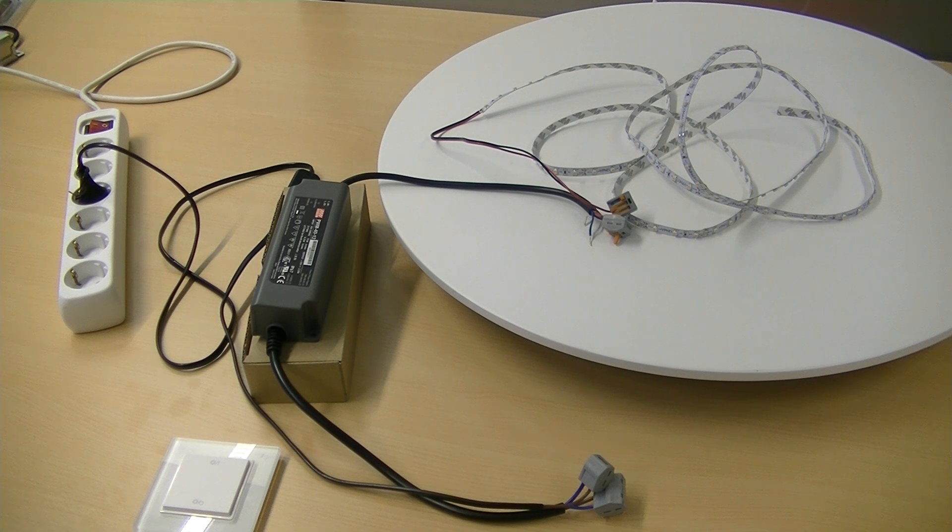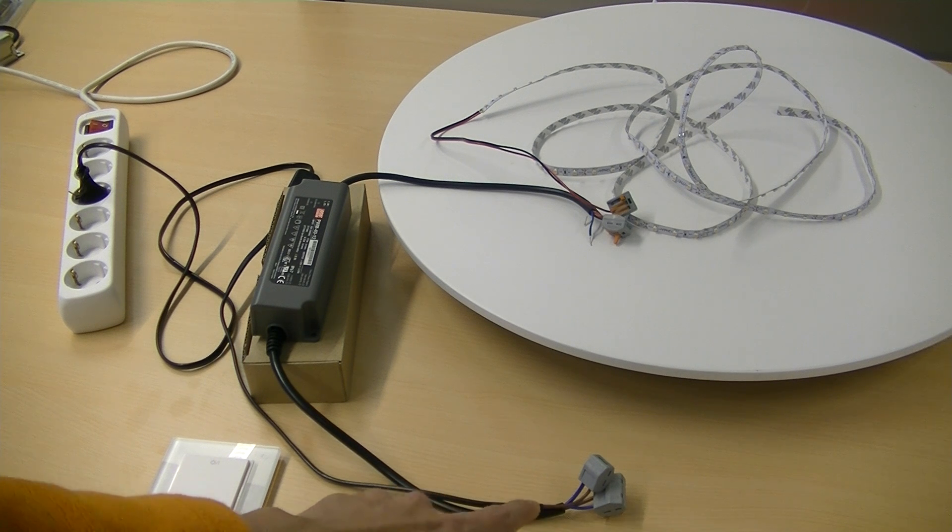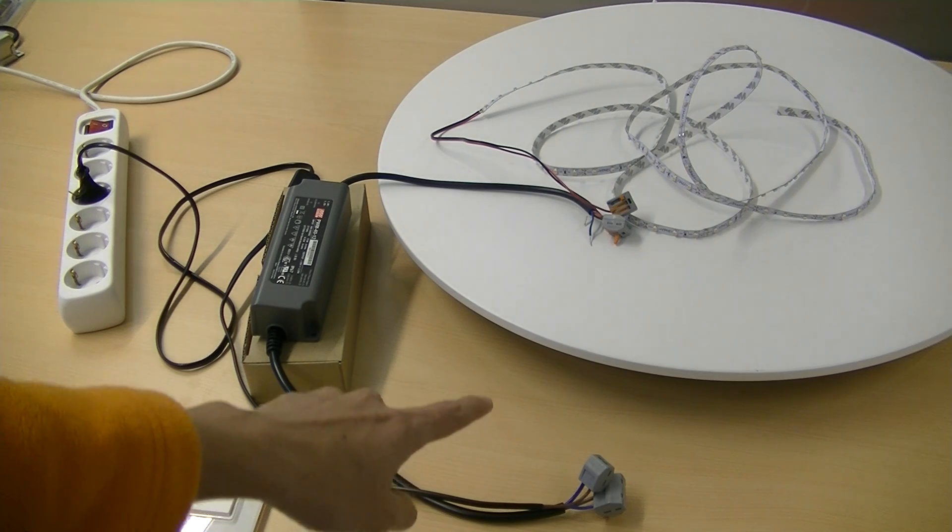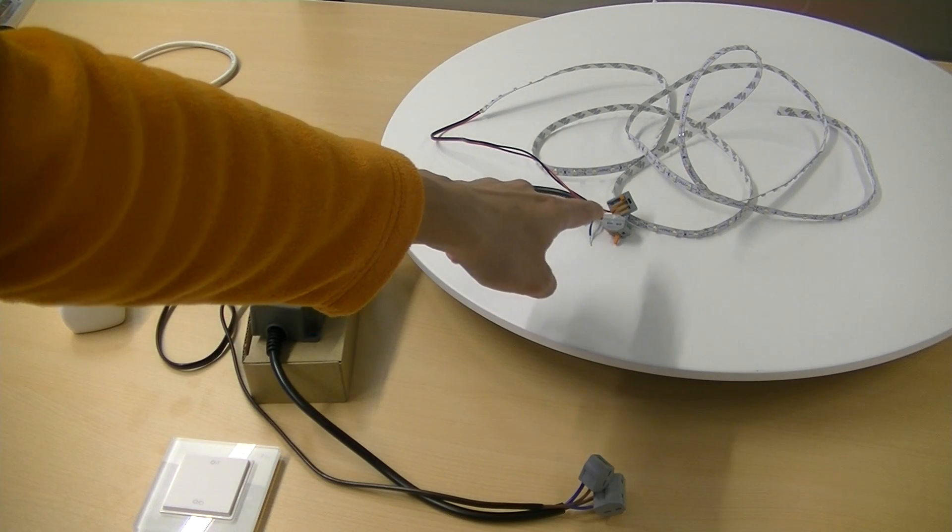The connection is very easy. First, the AC mains is connected using the Wago fast connector. Second, we connect the output of the driver to the 12-volt LED strip.